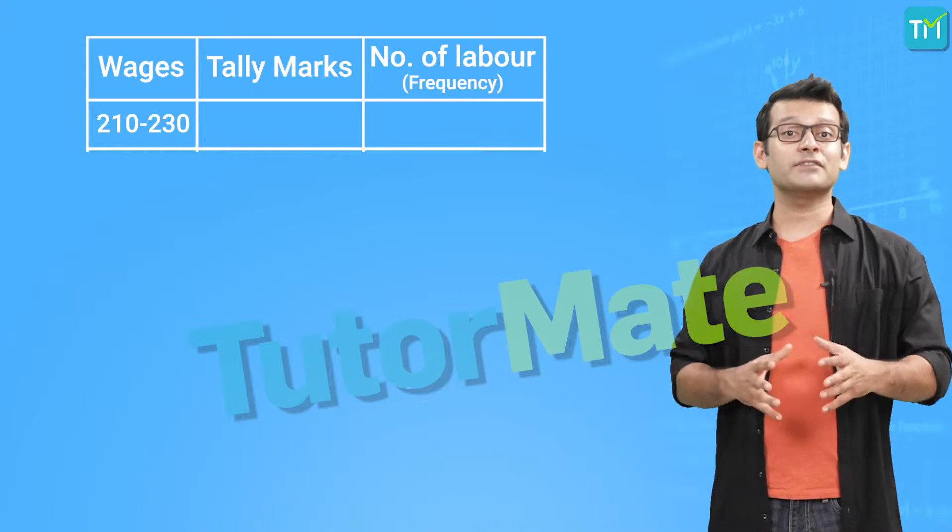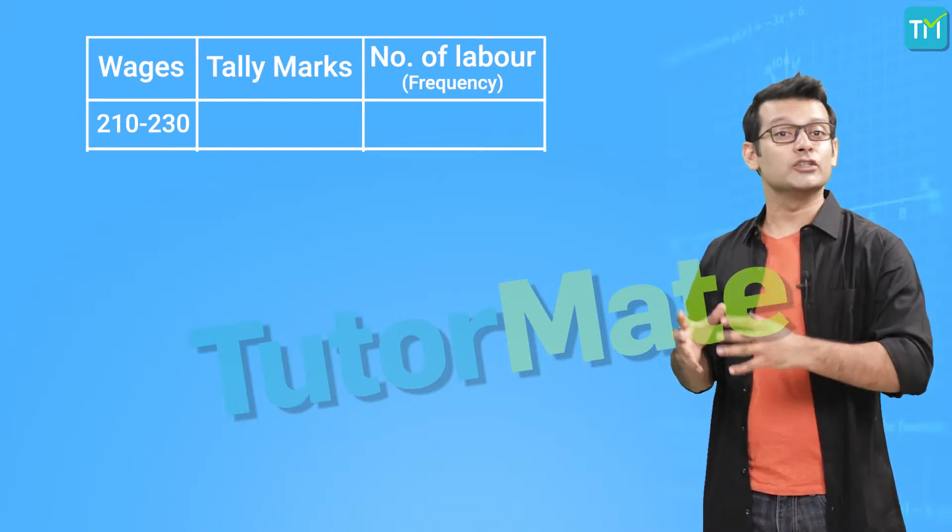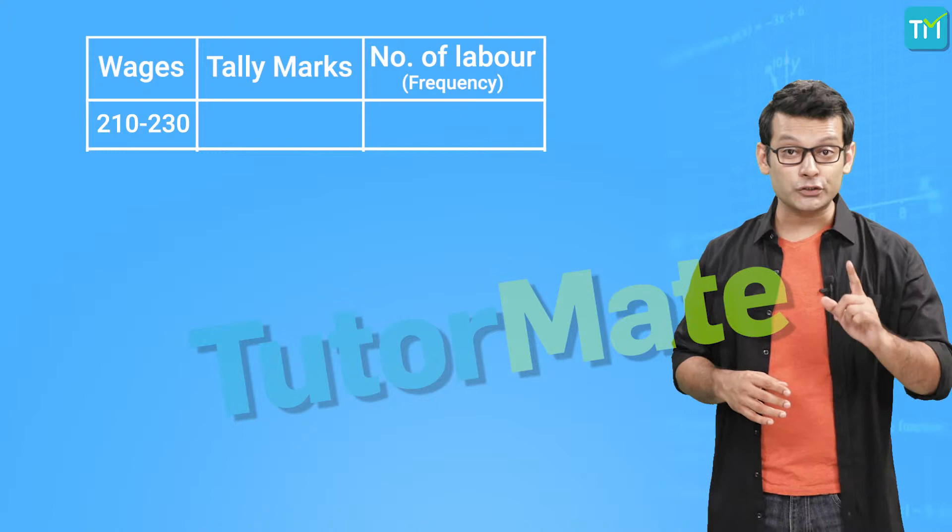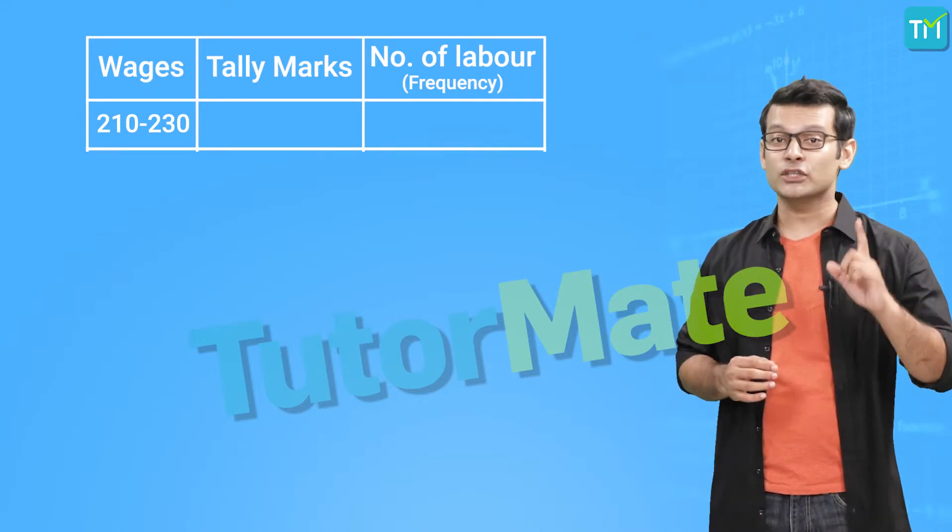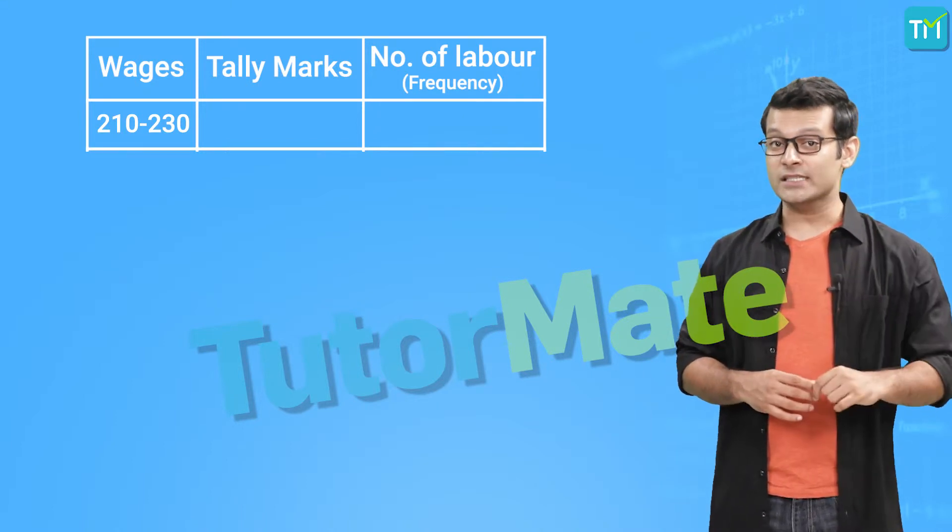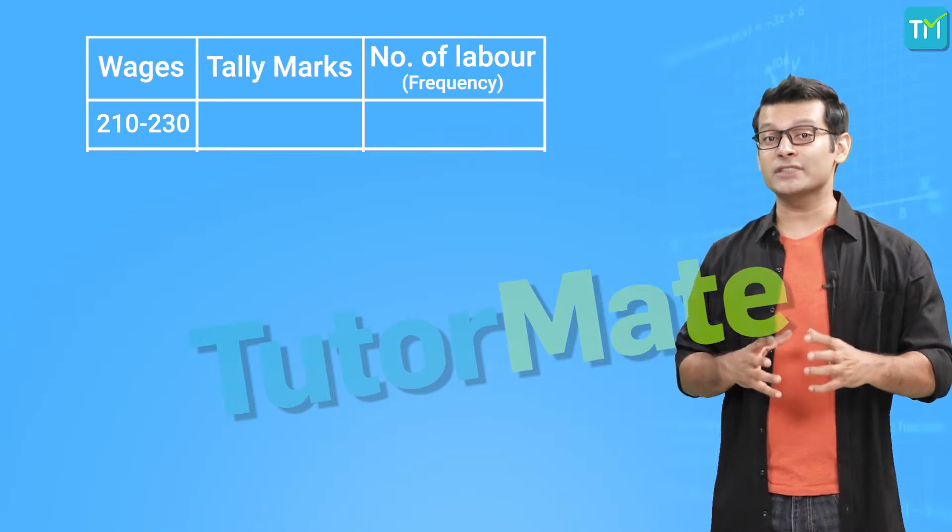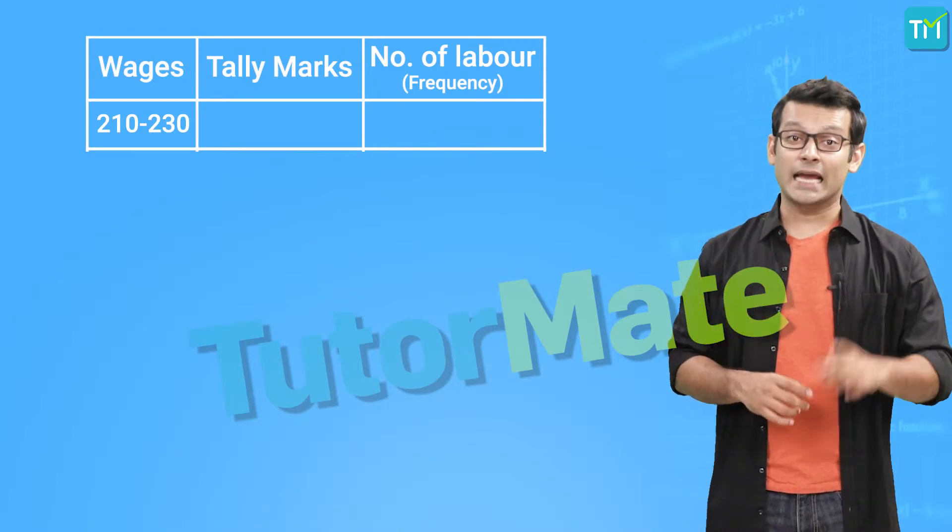We are already given that this class is 210 to 230. Also, it is given that we have to exclude the upper limit 230. This means the group frequency distribution is of the exclusive type, and so the limits are going to be continuous.